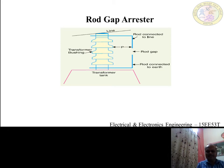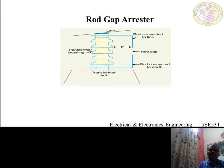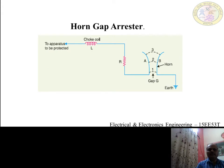The first one is the rod gap arrestor. Looking at the diagram, there are two rods made up of iron, with the length of each rod being 1.5 centimeters, bent in the form of a right angle. There is a gap between these two rods. One end of the rod is connected to the line and the other rod is properly grounded. Generally, the gap length is so adjusted that breakdown should occur at 80% of spark-over voltages. Under normal operating conditions, the gap remains inoperative. On the occurrence of a high voltage surge on the line, the gap sparks over and the surge current is conducted to the earth.